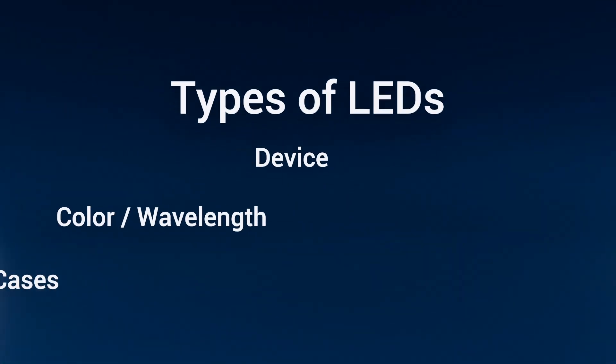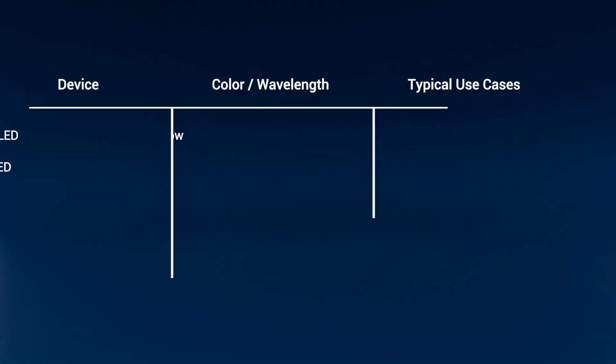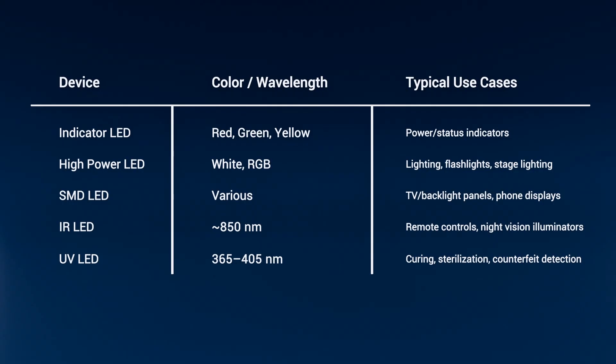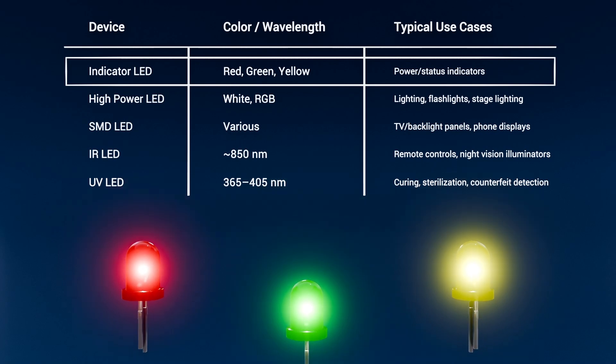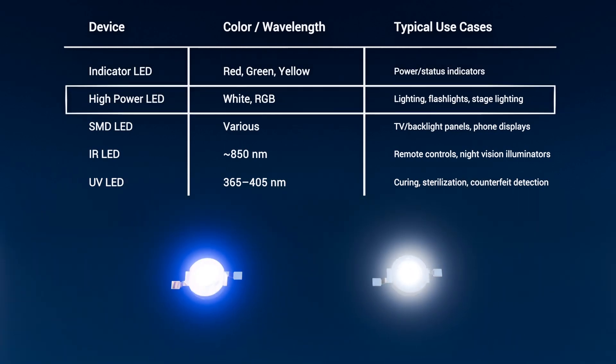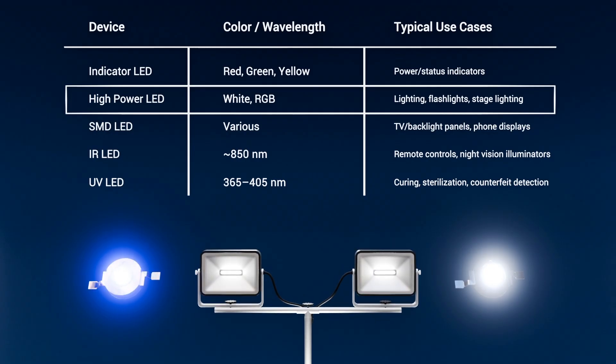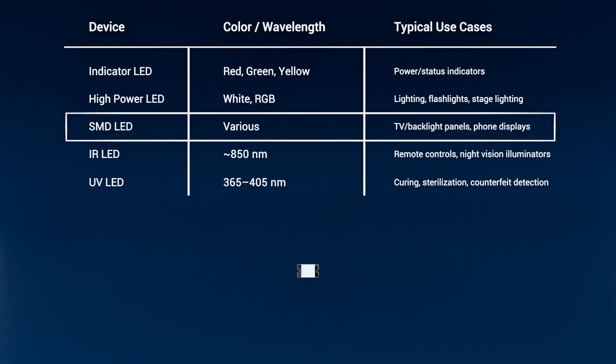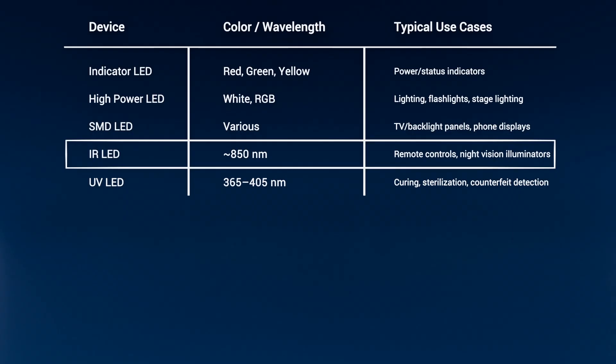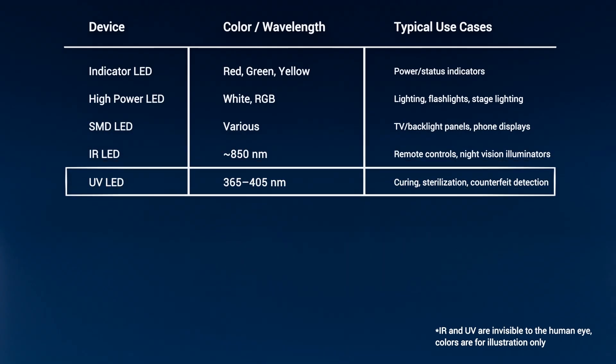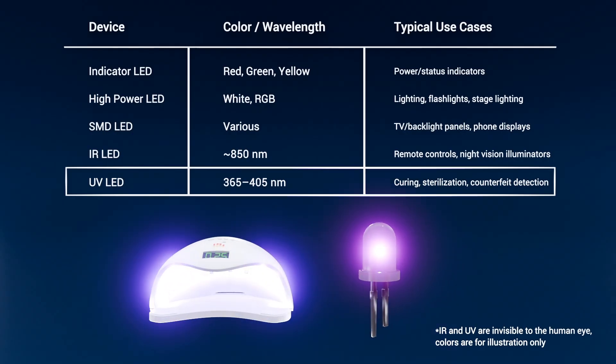The types of LED and their uses. Here is a table highlighting the different types of LEDs, their usual colors and the typical use cases. Indicator LED, red, green, yellow, power or status indicators. High power LED, white RGB, lighting, flashlights, stage lighting. SMD LED, various, TV, backlight panels, phone displays. Infrared LED, around 850 nanometers, remote controls, night vision illuminators. Ultraviolet LED, 365 to 405 nanometer, curing, sterilization, counterfeit detections.